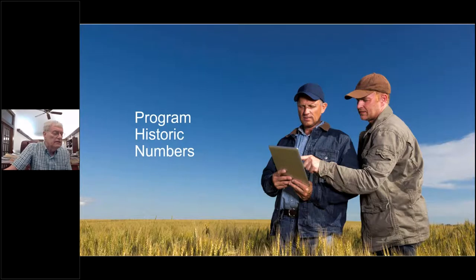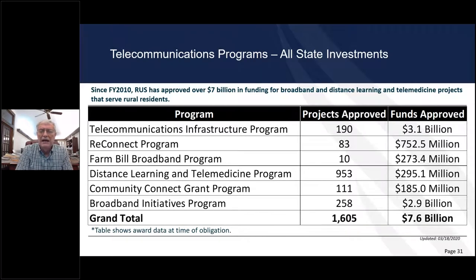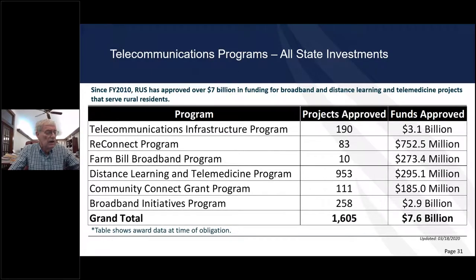Looking at historic numbers, we've got around eight billion dollars invested currently in rural America, with projects in each state. Your local GFR can get you state numbers on how much has been invested. That goes along each year and we continue to invest heavily in rural America through grants, loans, and other projects.